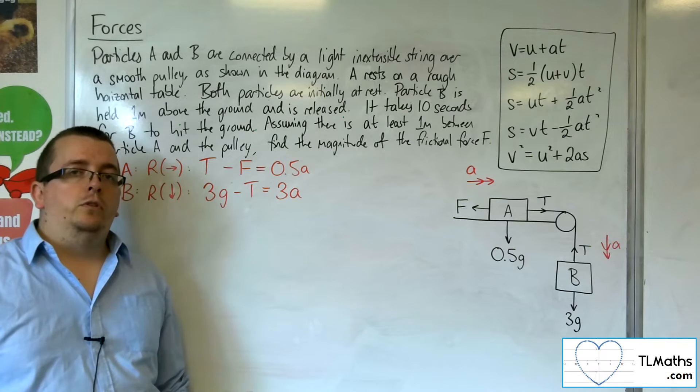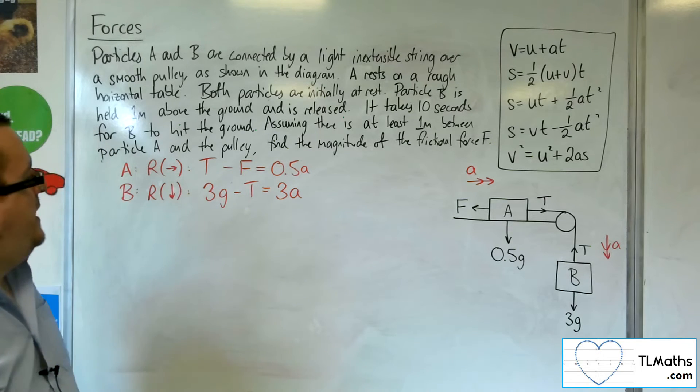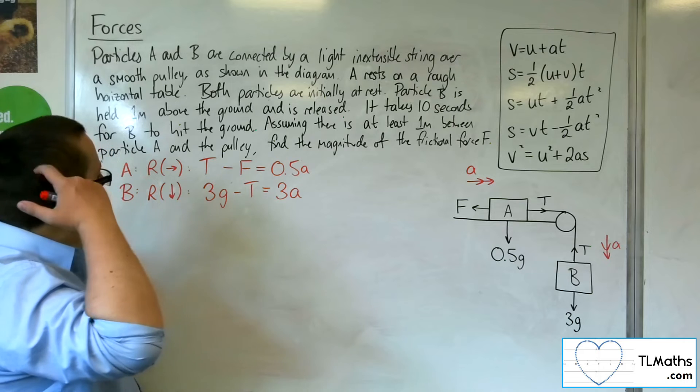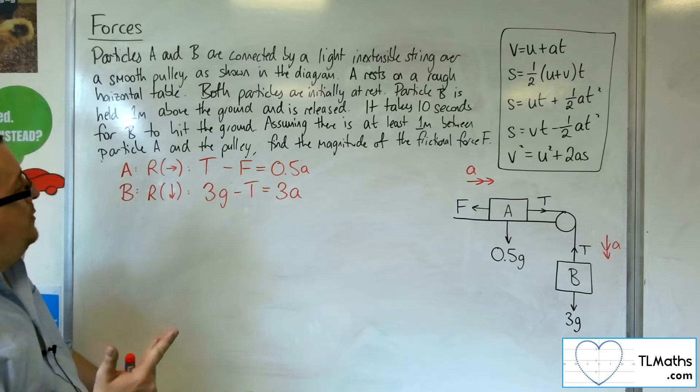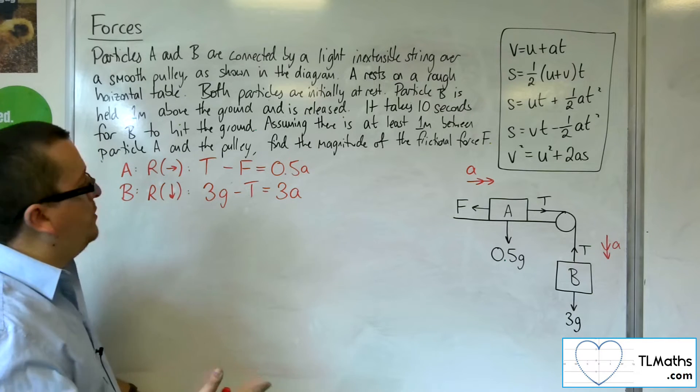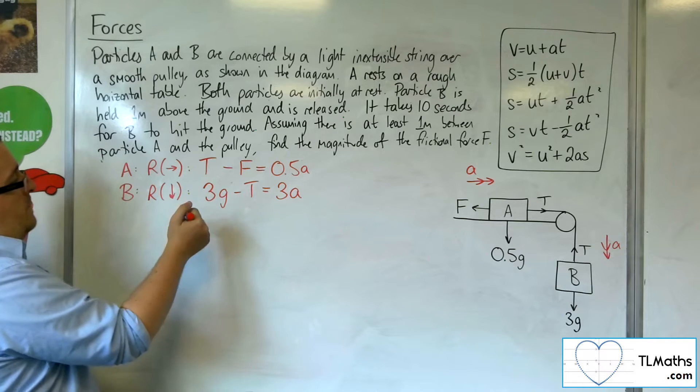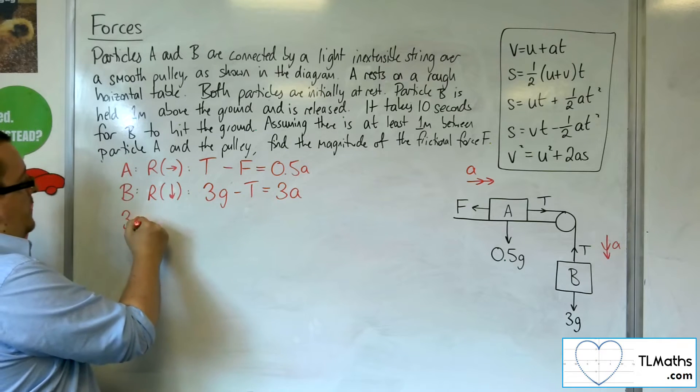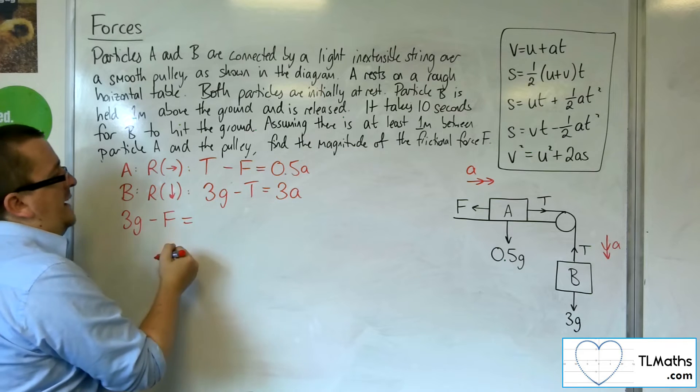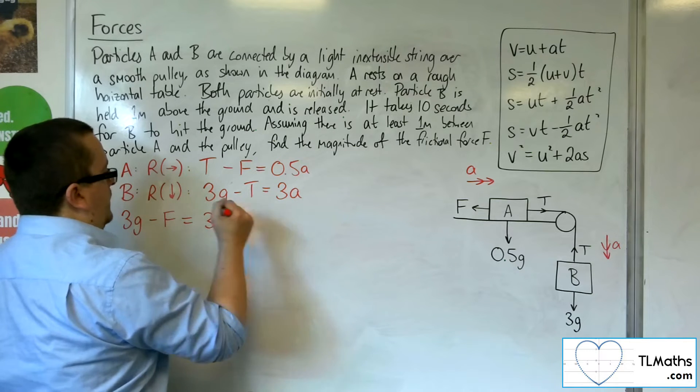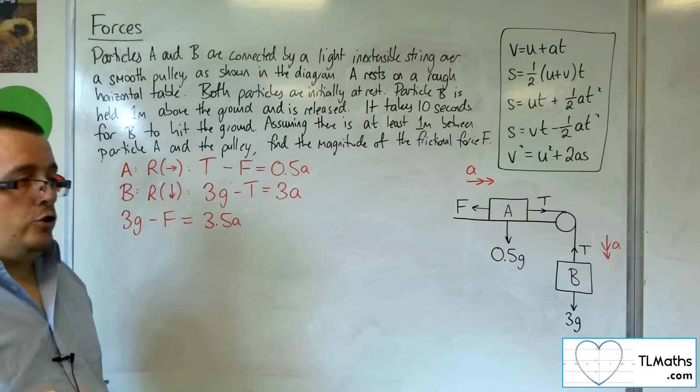So we have two equations here, but three unknowns. So we've got a little bit of a problem. Now what we can do is we can add those two equations together and it will knock out T. So if we add these together, we're going to get 3G, take away F, is equal to 3.5A. So we know that much.